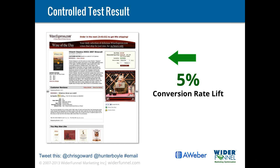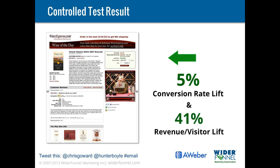You may be saying, 5% — that's nothing. But to their company 5% could be significant. More than that, we were also tracking revenue, and it turns out this created a 41% increase in revenue per visitor. People were buying more cases from variation A — 41% more. That was a big insight for them through this isolation. Now I'm going to show another variation — this was against a similar template, isolating an urgency factor.